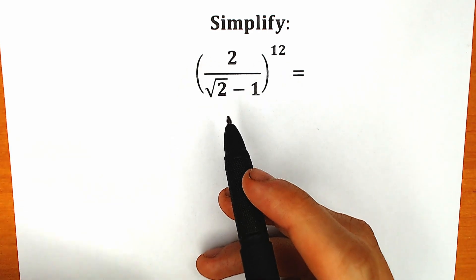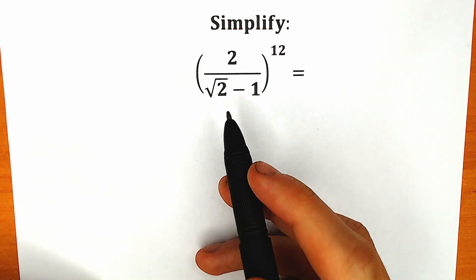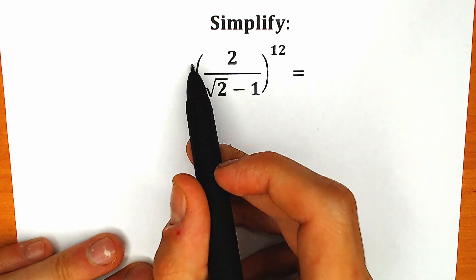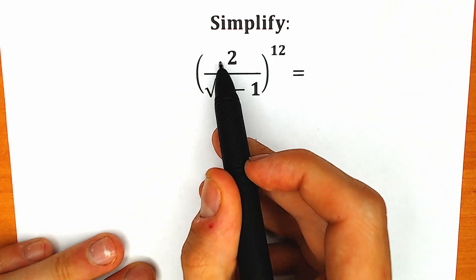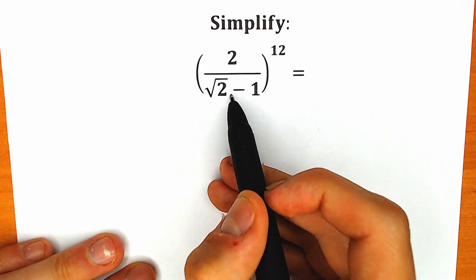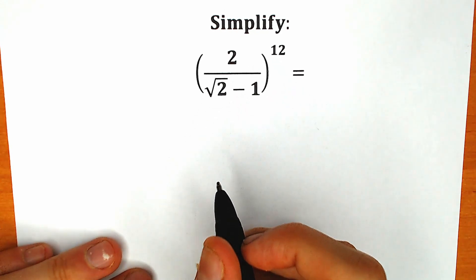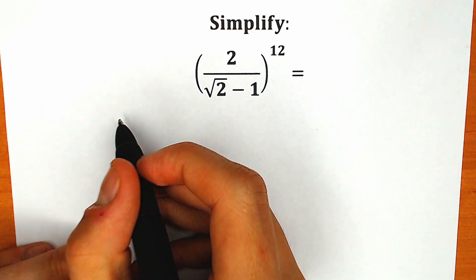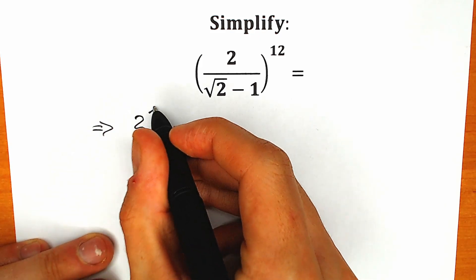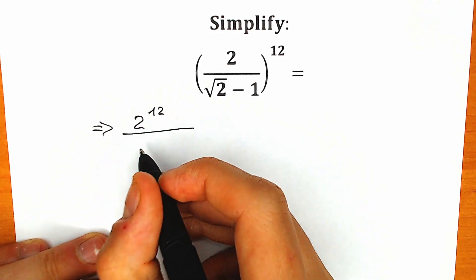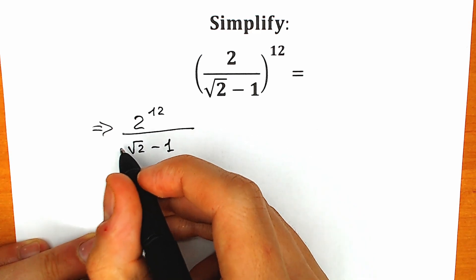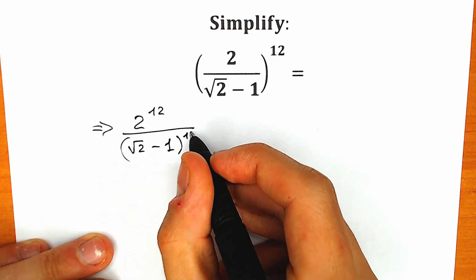If you have your approach or answer, you can also write your solution down in the comment section. So right now let's try to solve it. First of all, we raise this fraction to the power 12. We can easily express it as our numerator to the power 12 and our denominator raised to the power 12 — let's split it. So we have 2 to the power 12 and in the denominator: square root of 2 minus 1 raised to the power 12.